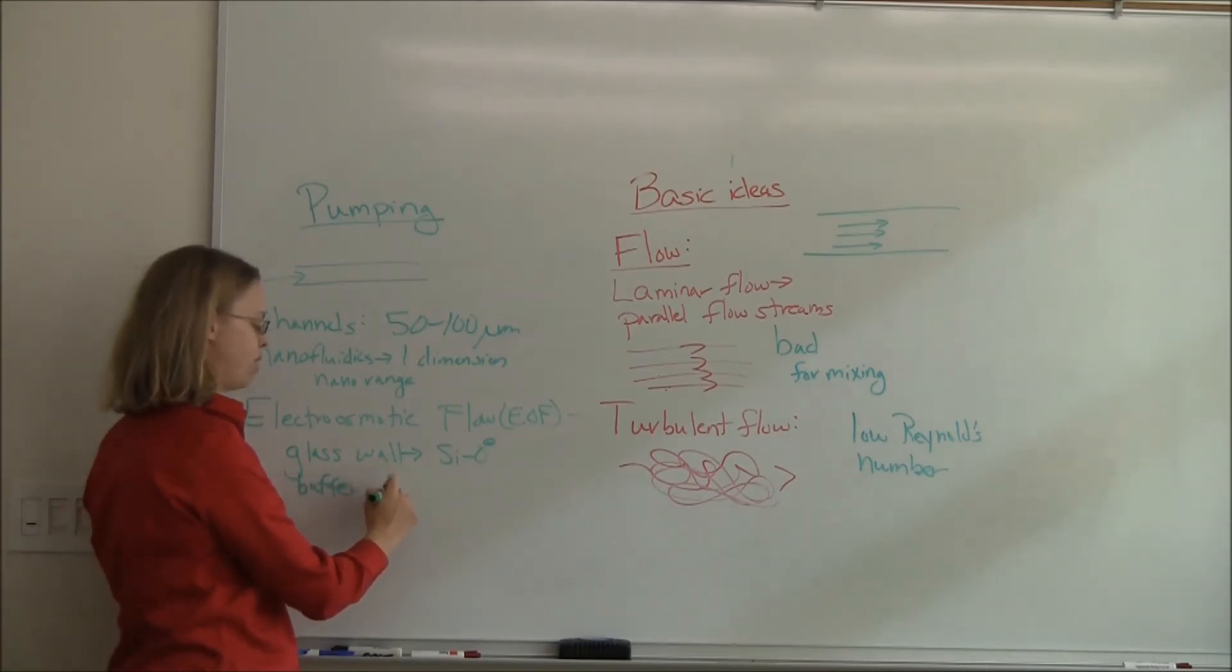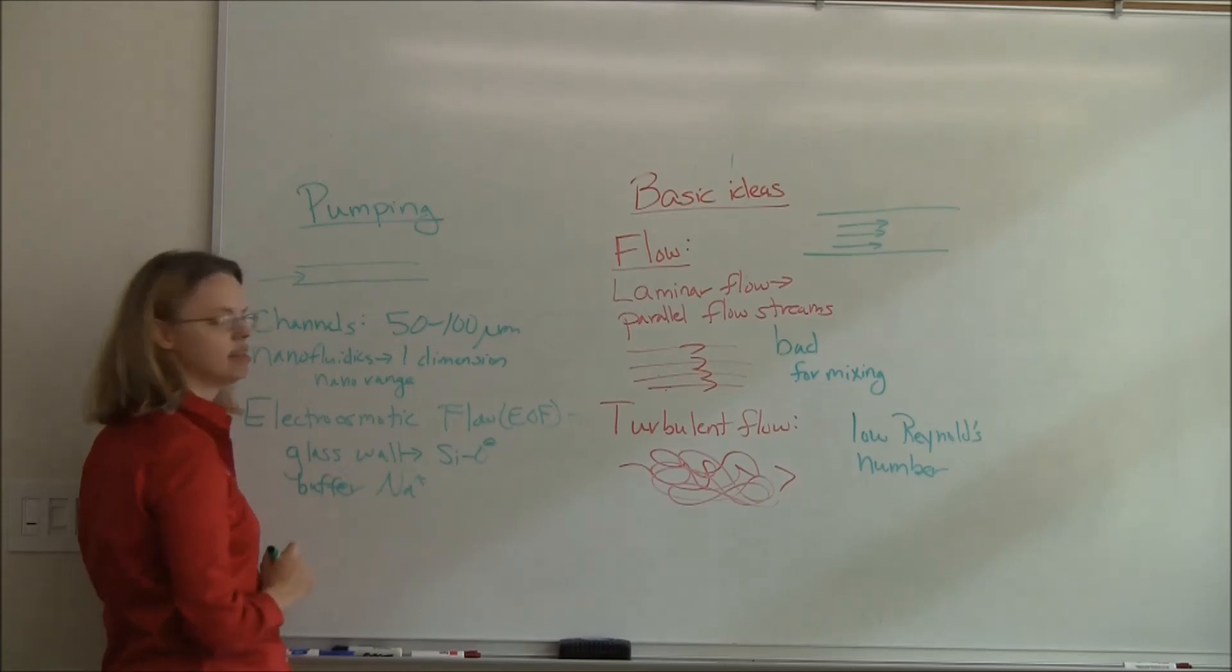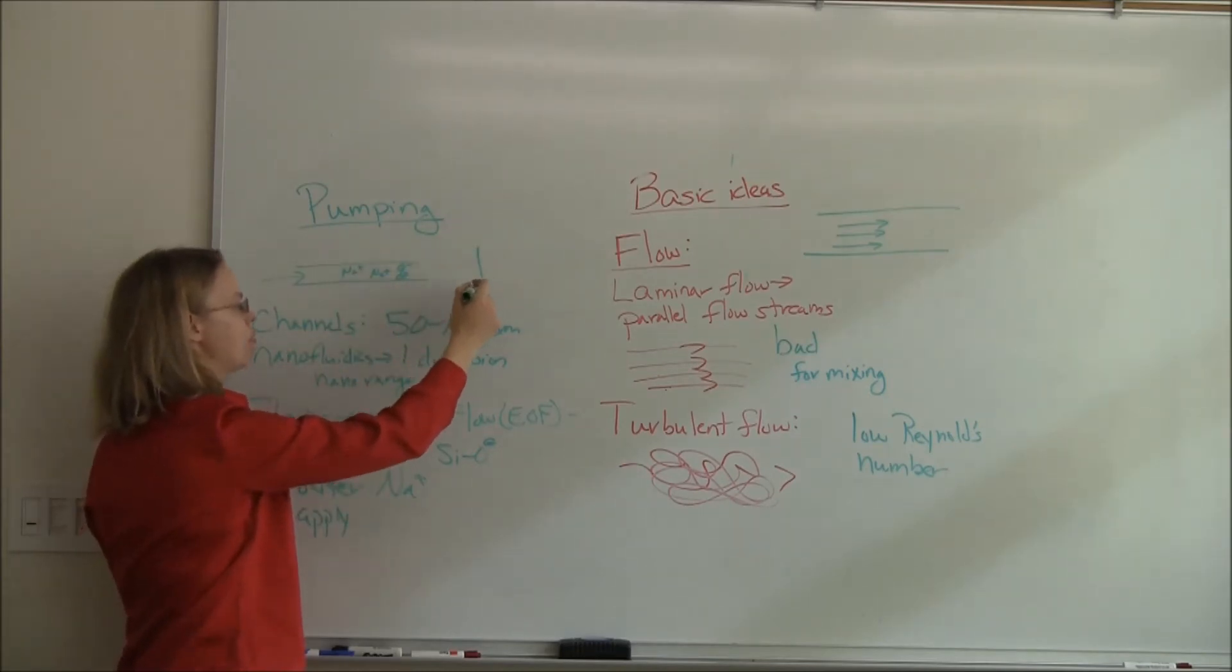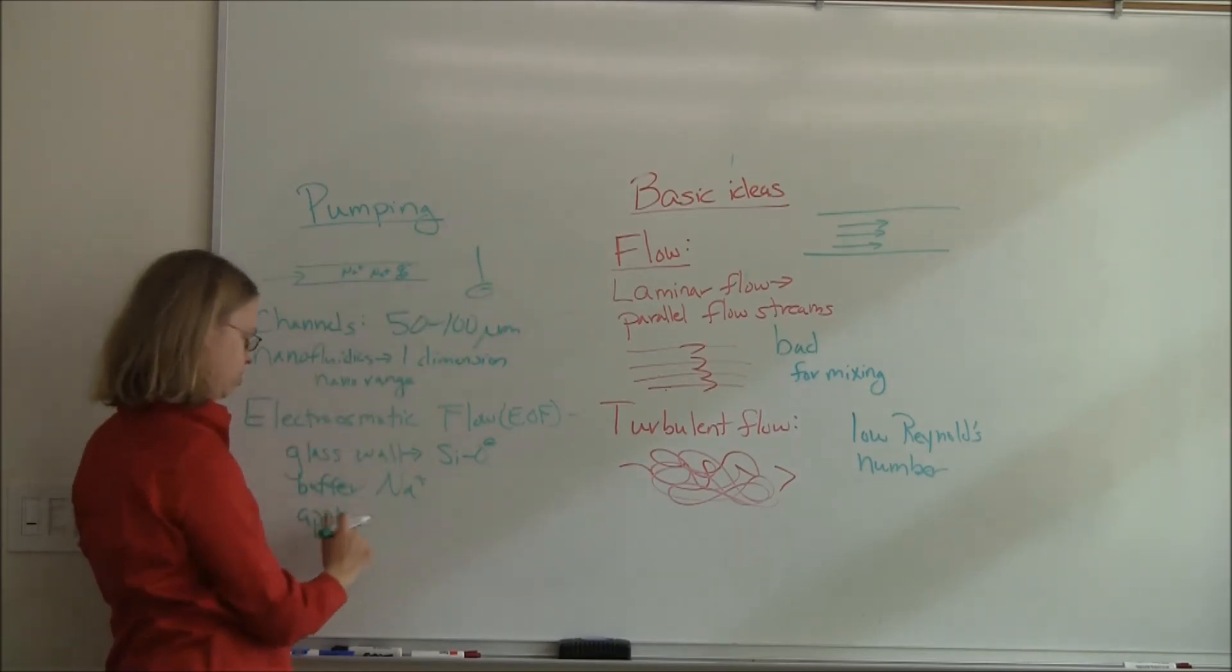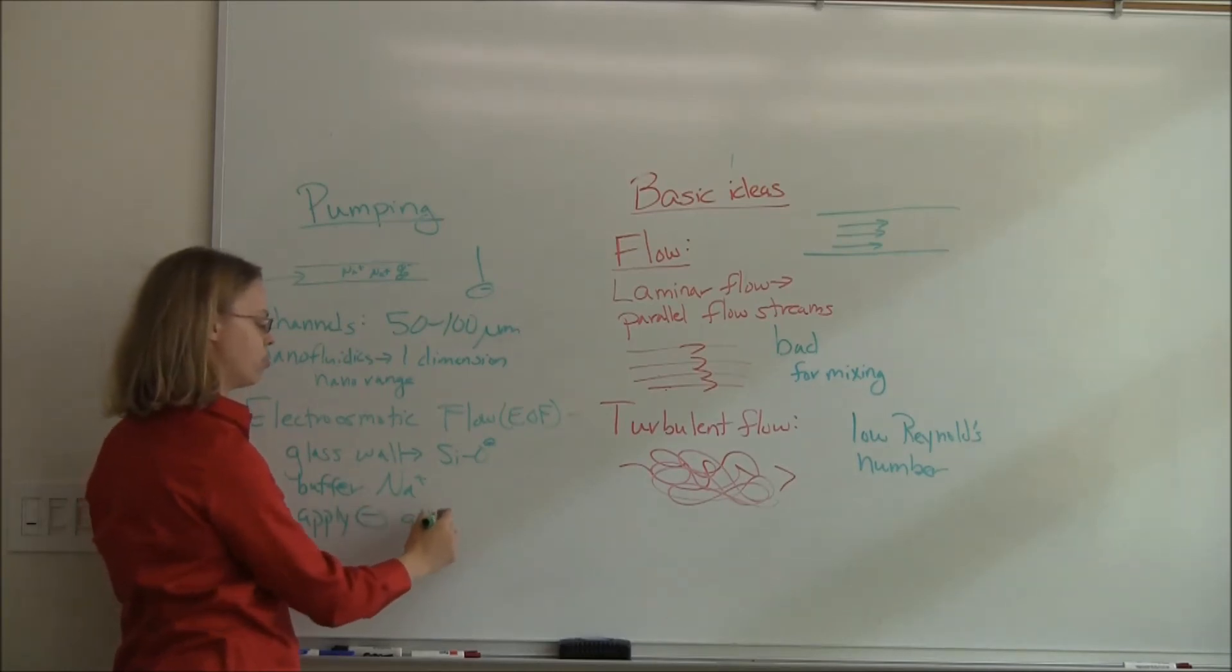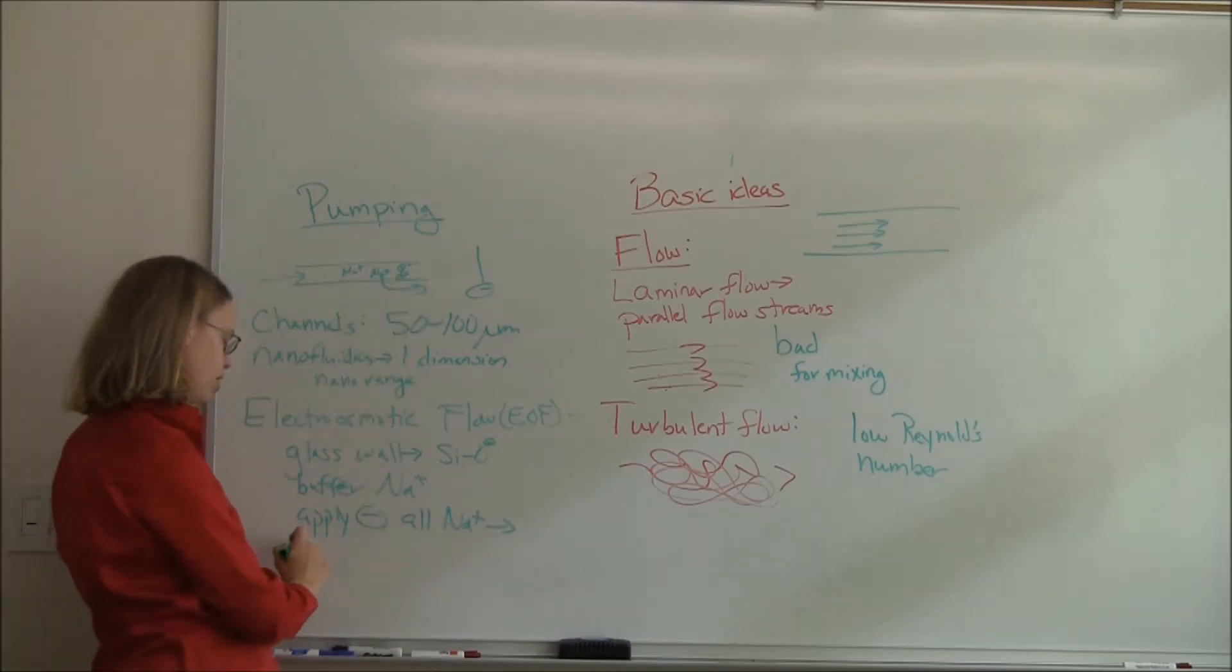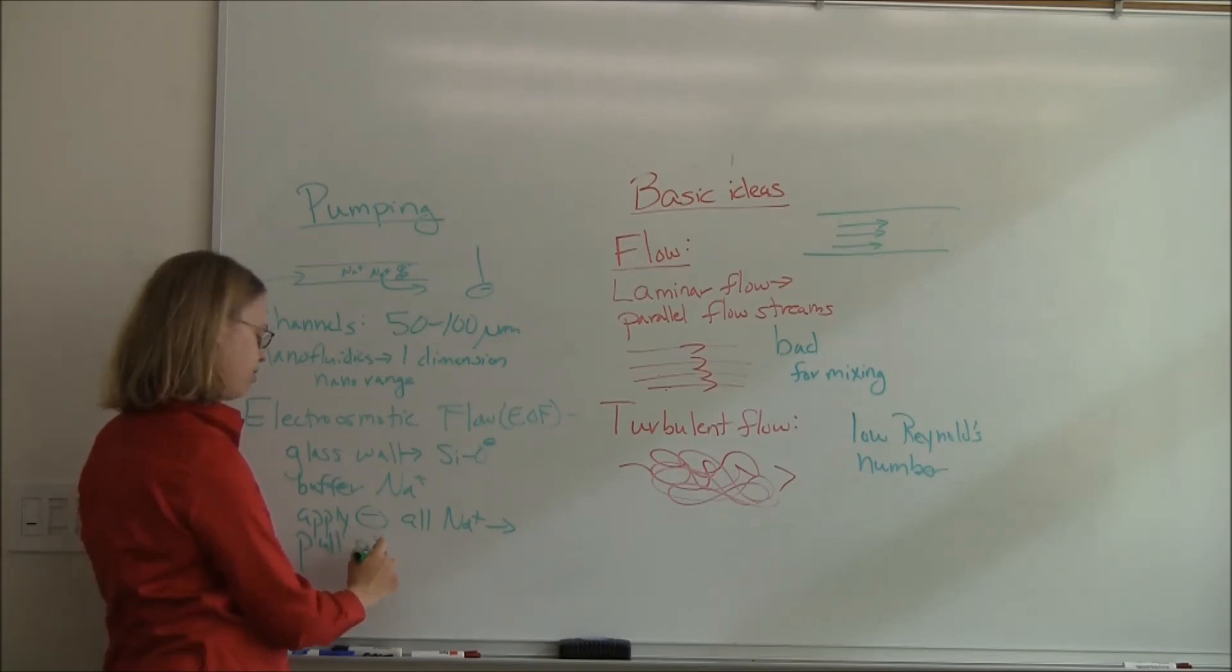basically if you apply a positive voltage, so this is filled like with sodium plus and chloride, but now I apply a negative voltage at the end, all of those positive ions are going to go towards the anode. So these sodiums are going to go towards the anode, and they end up pulling the solution with them.